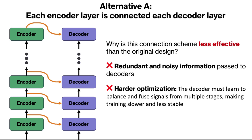Let's dig deeper into connection scheme A, which connects each encoder to each decoder on the same level. This is very similar to skip connections in U-Net, but we should note that these are cross-attention connections, not skip connections. Why is this design less effective than the original? The main reason is that the output of early encoder layers is not fully transformed. Each encoder layer with its attention and feed-forward network essentially transforms the input into a new space, so passing these partially transformed representations from early encoders adds noise and redundant information to the decoder, making the decoder's job more difficult. It's better to let the decoder process the final, fully processed representation from the encoder.